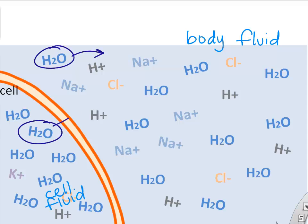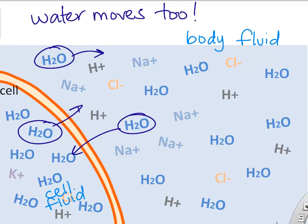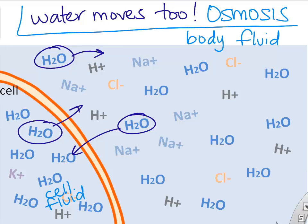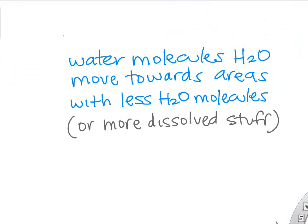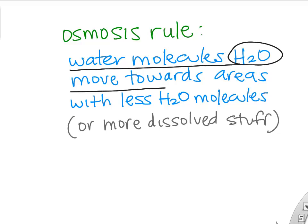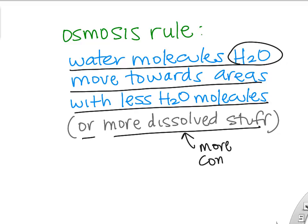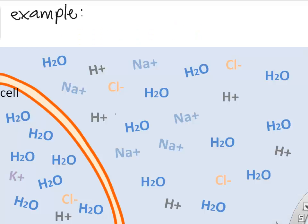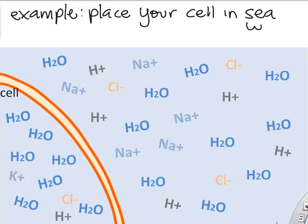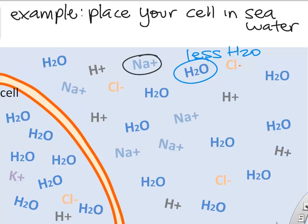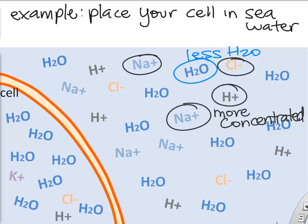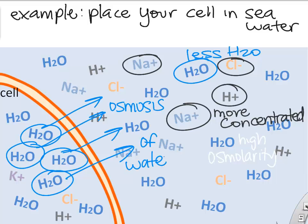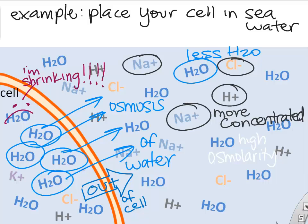Osmosis is the diffusion or movement of water. Water moves around randomly based on how much water is in an area inside or outside the cell. The rule of osmosis: water molecules tend to move to areas where there are fewer water molecules or more dissolved stuff. More concentrated, high osmolarity means less water. For example, placing a cell in seawater — seawater has more solutes, high osmolarity, less water — so water from inside the cell will diffuse out by osmosis and the cell will start to shrink.